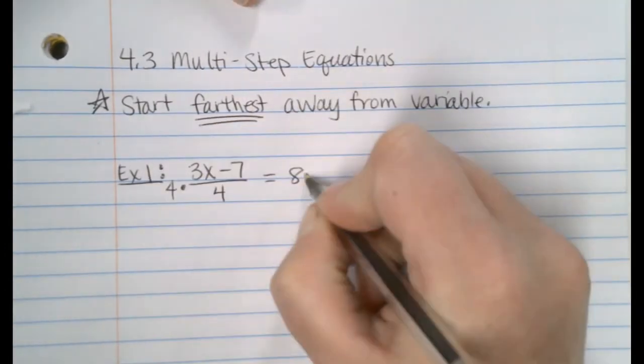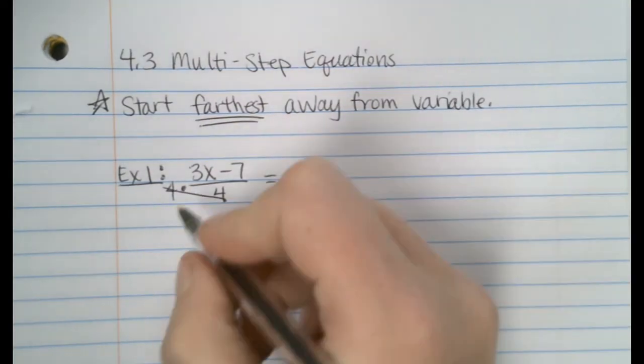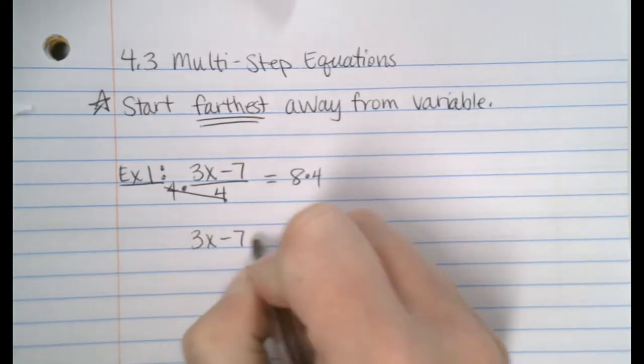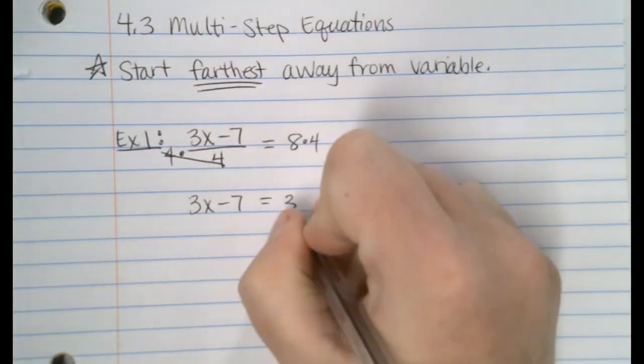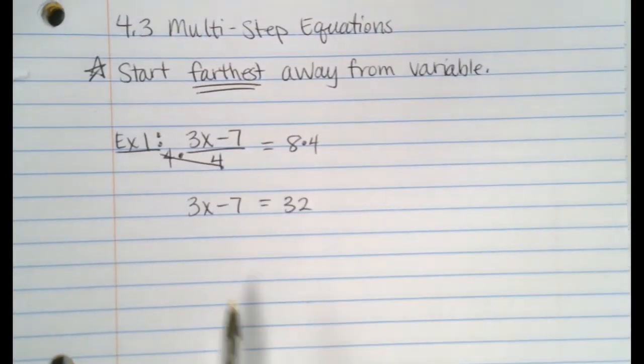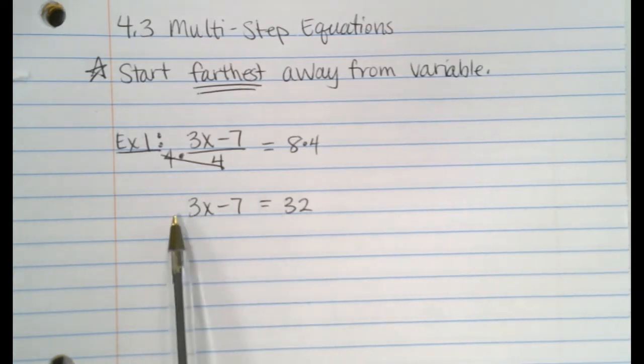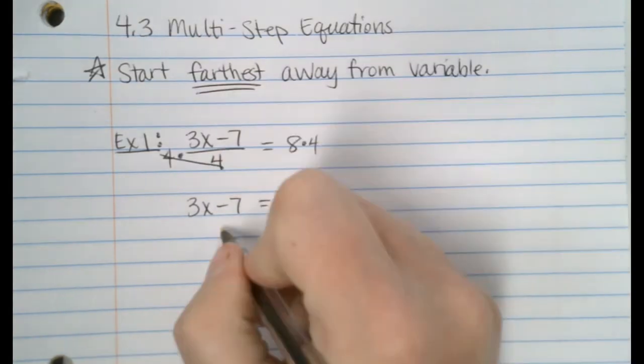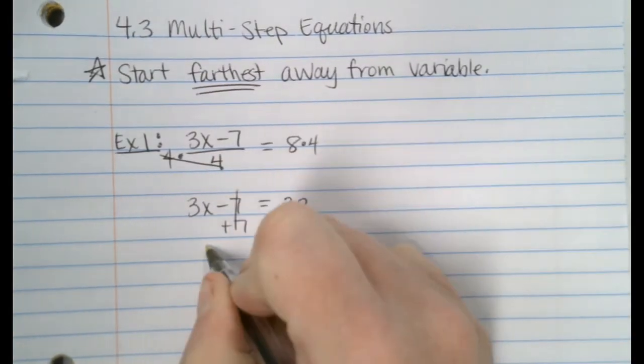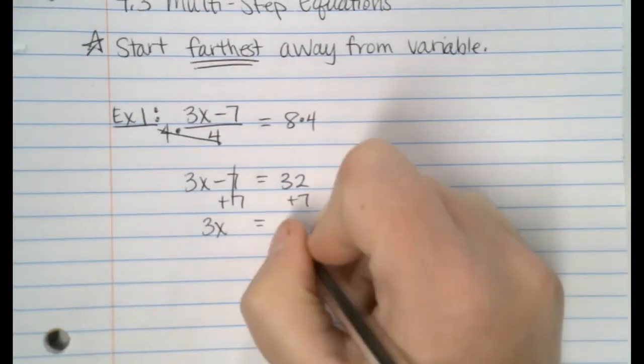How do we get rid of this 4? So step 1, we already know how to do this. We multiply by 4 to get rid of the dividing by 4. I'm going to bring down 3x minus 7, and then 8 times 4 is 32. And then now we've got a whole new equation, which we've been solving these for a few days now. Is the 3 or is the 7 further from x? The 7. So how do we get rid of a minus 7? Add 7. Bring down your 3x and your equal sign. And then 32 plus 7 is 39.